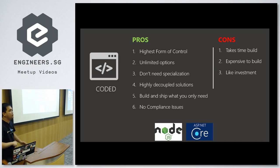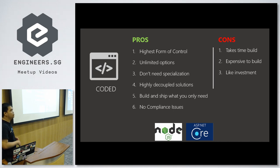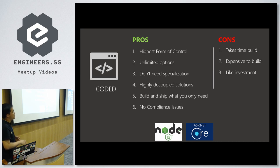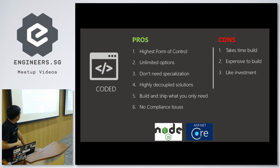The developer favorite: build your own API Gateway from scratch. It offers the highest form of control — for example, if HTTP/2 was just released and you want to implement server push, you can do it since you're coding the gateway yourself. You have unlimited options as long as you can think of a solution to aggregate the APIs. You don't need specialized knowledge like Azure API Management — just a developer who understands C# and HTTP — and you'll have highly decoupled solutions.